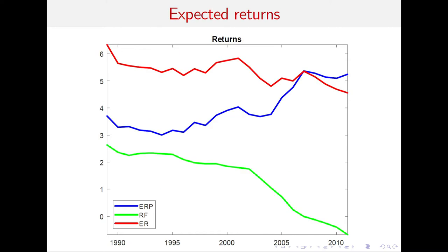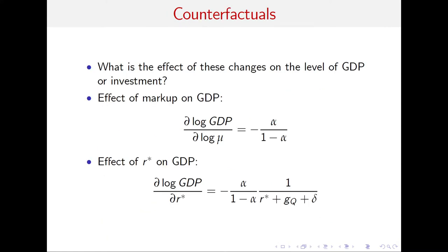This is the composition of expected returns. The red line — the expected return on equity — is relatively stable, while the green line shows the declining risk-free rate, and the blue line is the gap between the two. According to this estimation, we're documenting an increase in the equity risk premium from about 4% to about 5.5% over the sample.